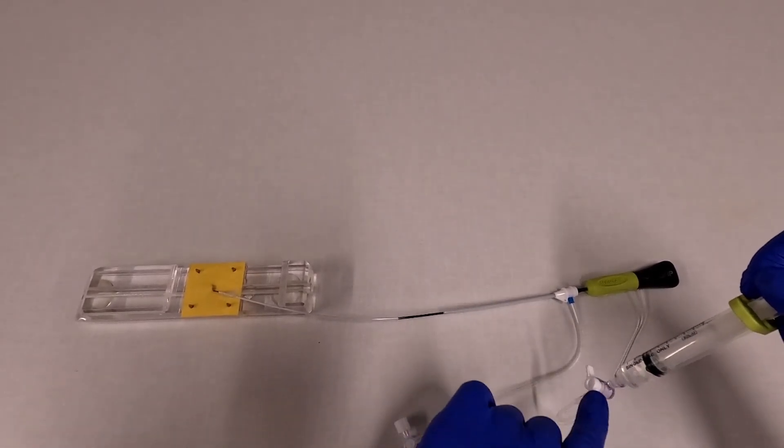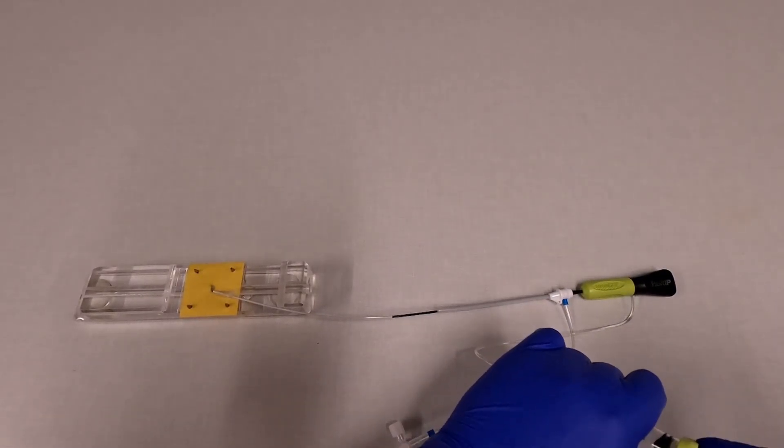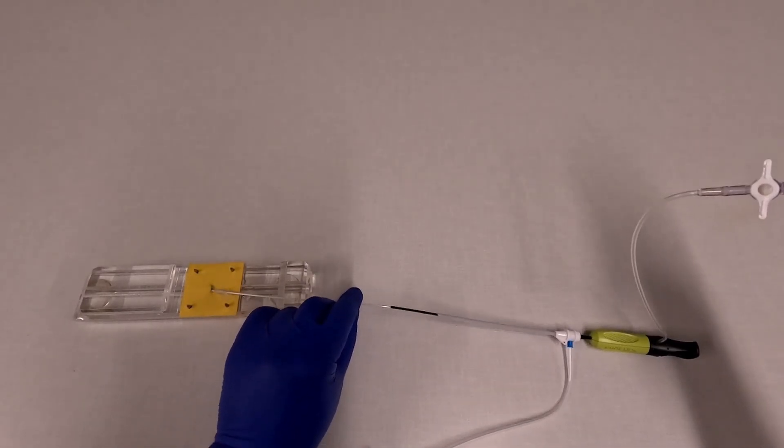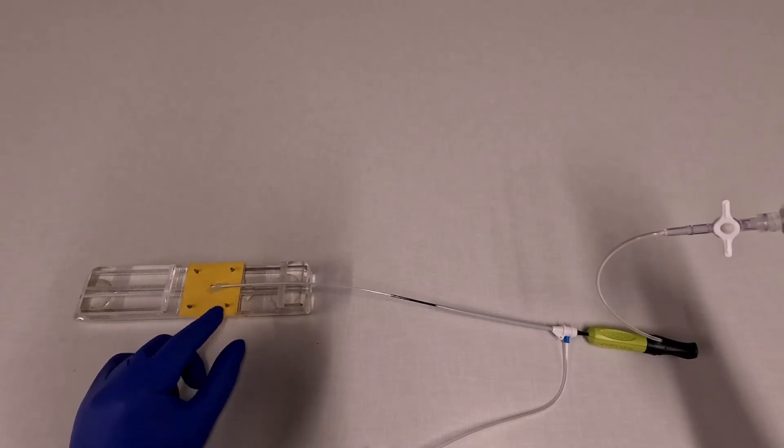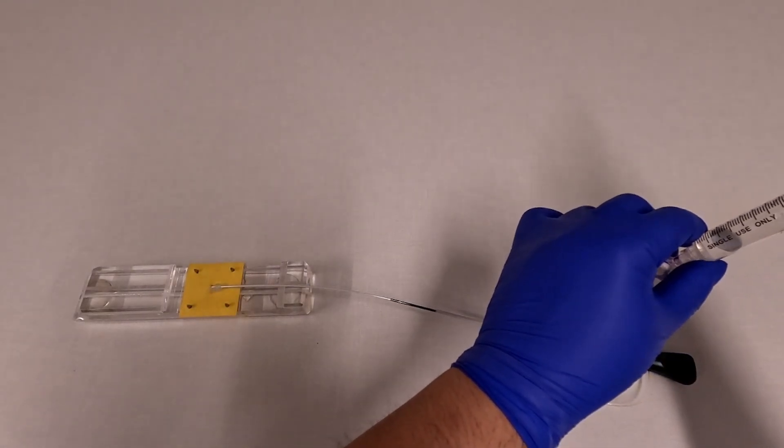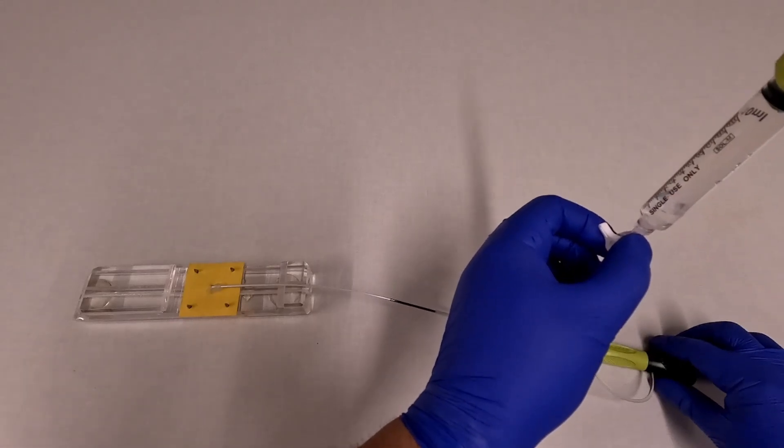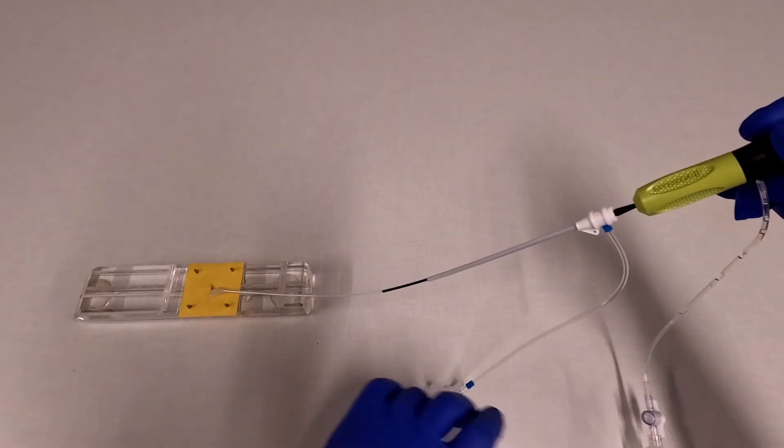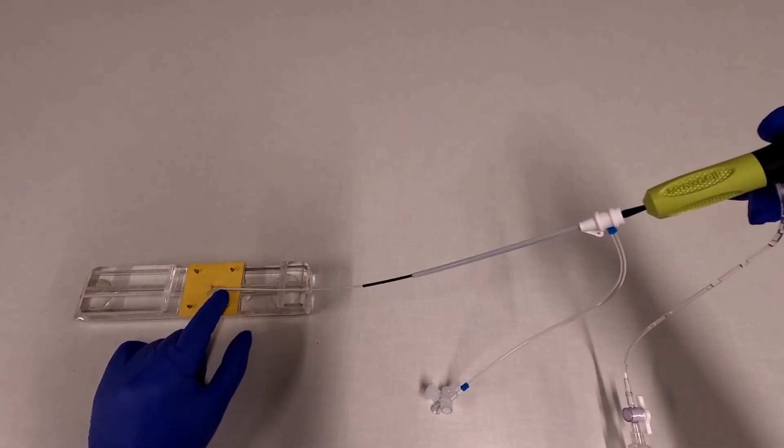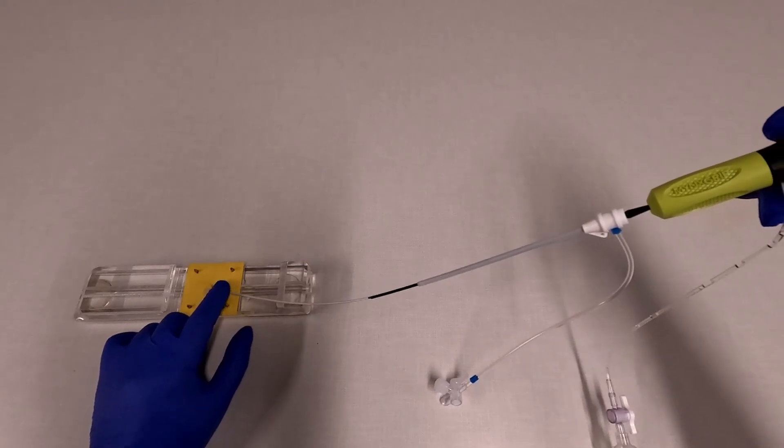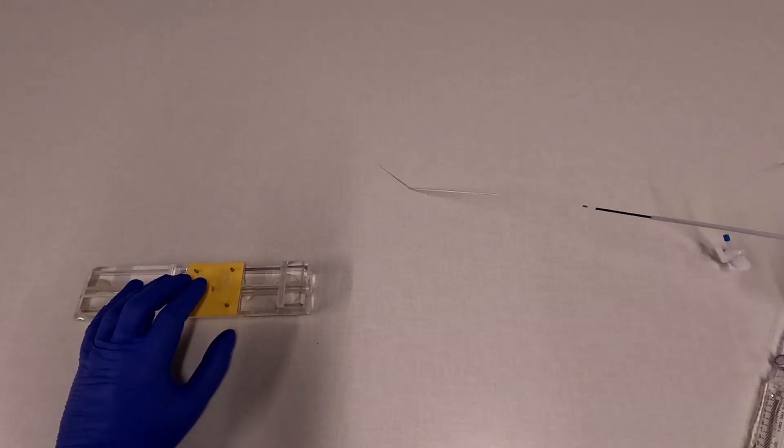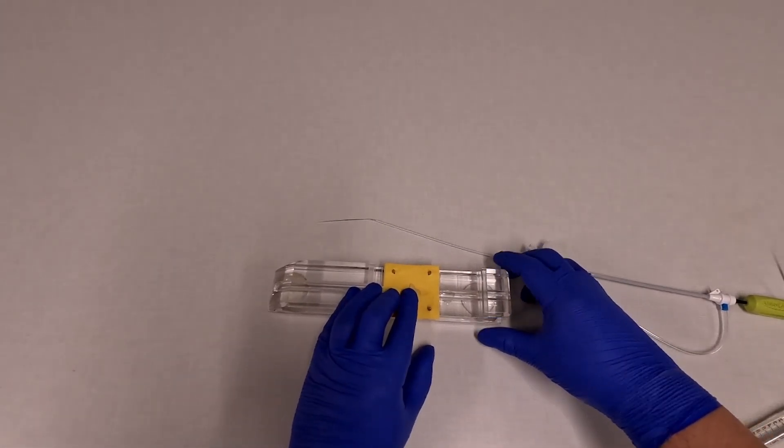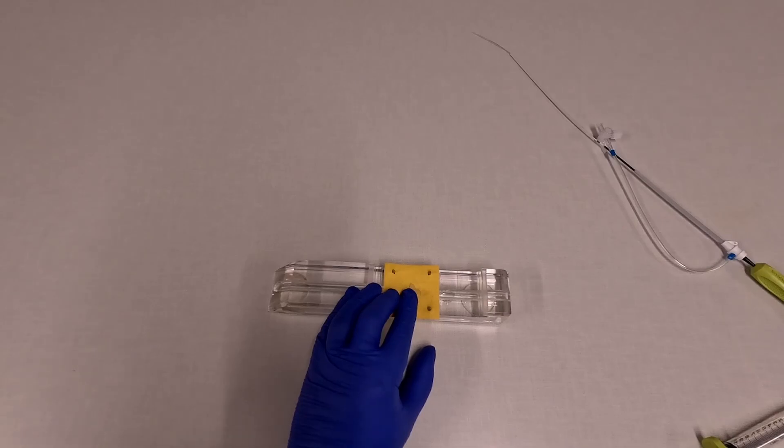So at this point, while keeping the stopcock closed, you're going to pull negative on the syringe. This just makes it easier for the next step. Now you're going to open the stopcock. This collapses the balloon on the inside. On this model, I have to hold pressure at the arteriotomy site, but in reality, you don't. It would be held by subcutaneous tissue. Then just pull the device straight out and hold manual hemostasis at the site for about one minute.